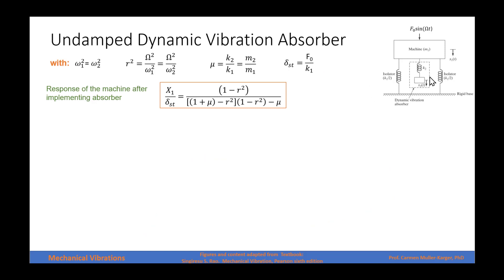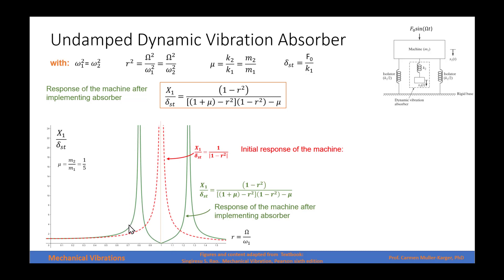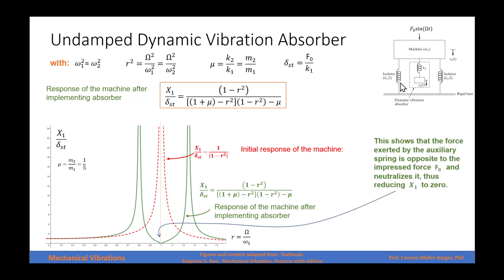When we have the vibration absorber, we want to analyze the magnitude of the response of the machine. Using the equation derived earlier, this green graph shows the amplitude of the response of the machine. For r = 1, the response equals zero — including that second spring creates a force that neutralizes the forcing force, making the displacement equal to zero at that operating frequency. We now have two new natural frequencies because we have a two degree of freedom system.